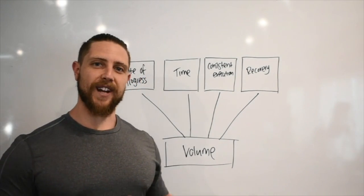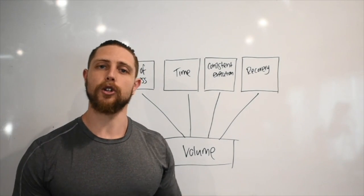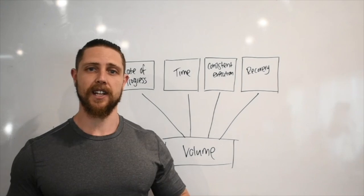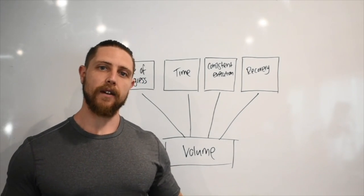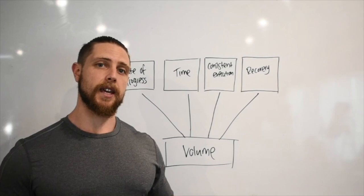Before we go any further, we need to make sure we're comparing apples to apples and we're all on the same page. We need to define what I mean by volume. When I say volume, I'm talking about hard working sets per muscle group, with the caveat of the rep range being between 6 and 20 with an RPE of 6 or more.